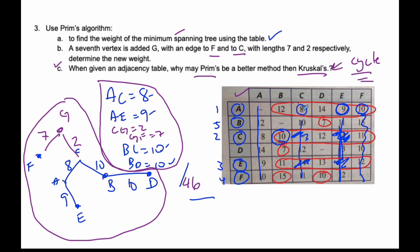You can just do this systematically and you're never going to have to worry about a cycle if you follow Prim's algorithm. That's why if you have a table, Prim's is probably the superior method to use.